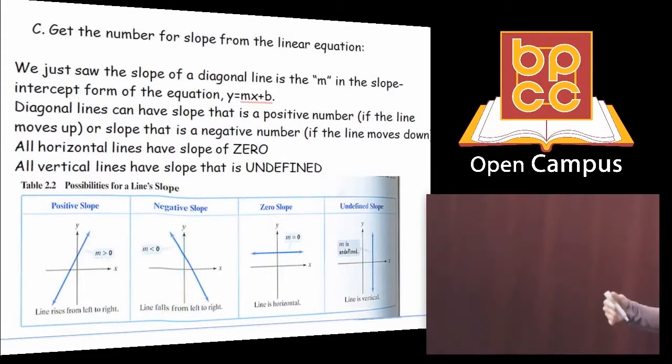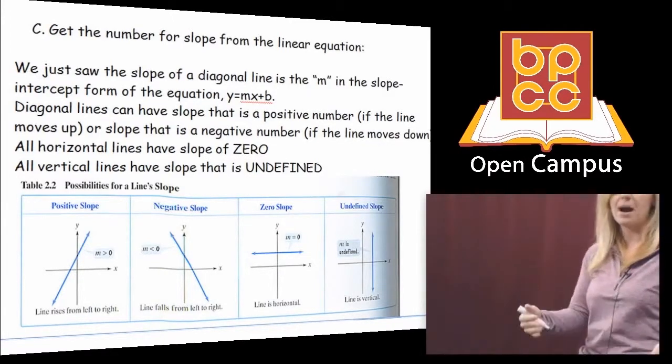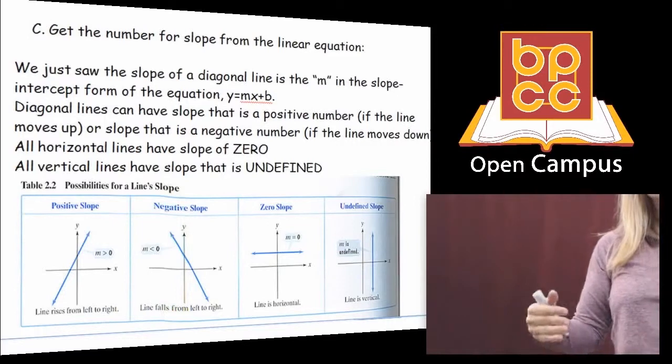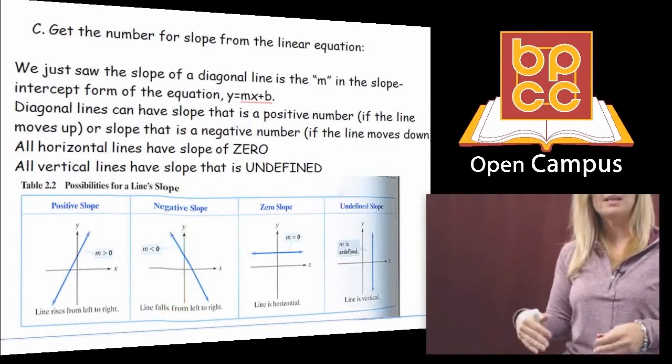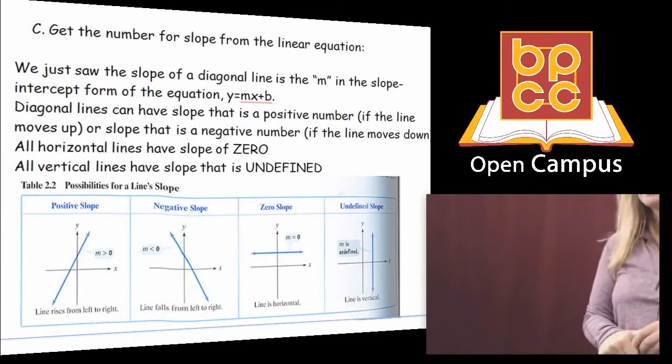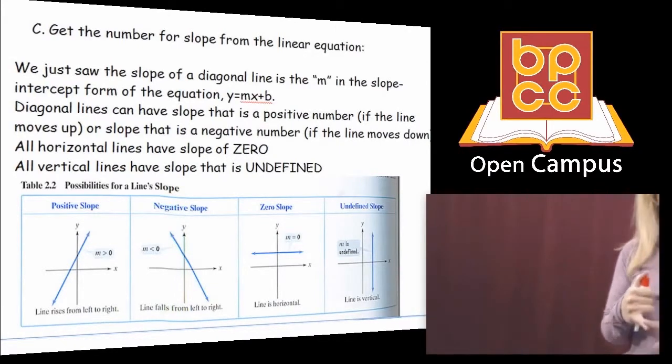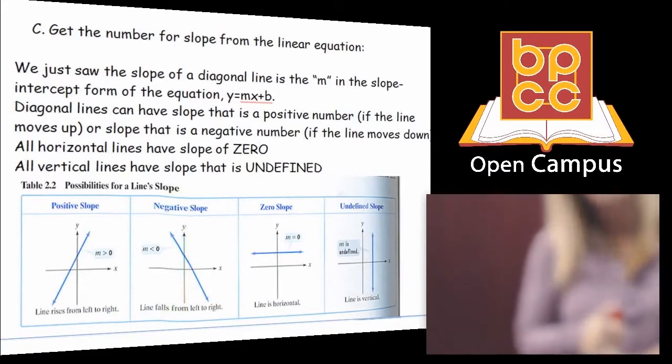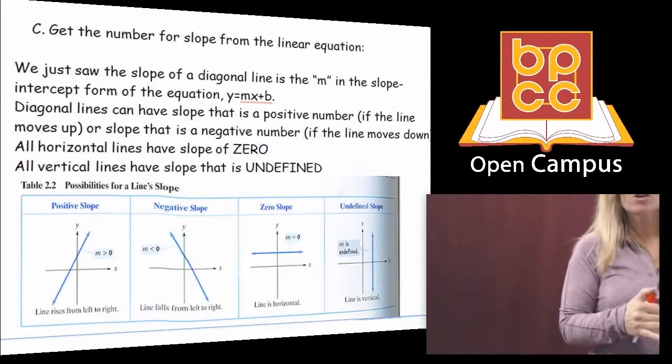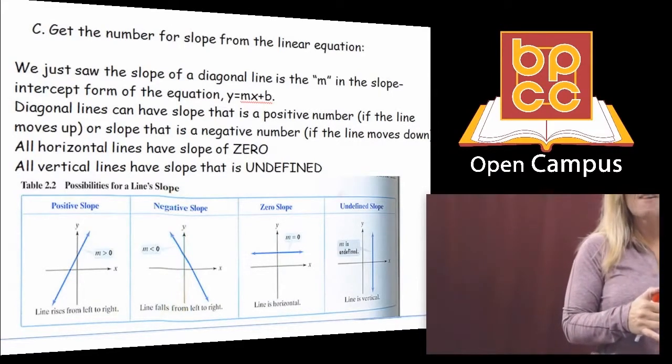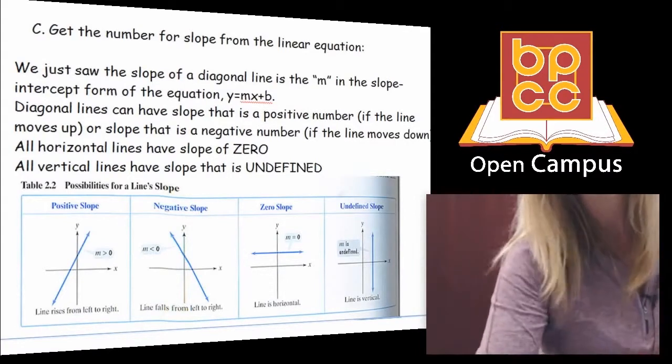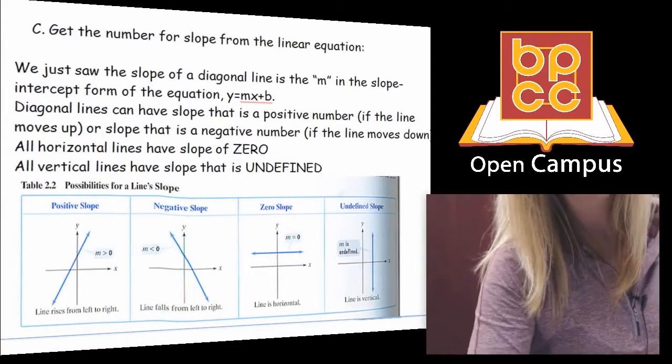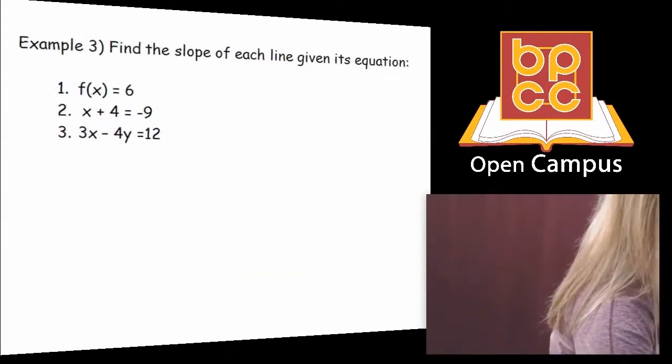If the diagonal line goes up, the slope's going to be a positive number. If the diagonal line goes down, the slope's going to be a negative number. If the line is horizontal, it's not going up, it's not going down, it's staying steady, the slope is zero. And if the line is vertical, the slope is called undefined. It doesn't exist. So let's look here. I believe we have three examples. So let's go to the whiteboard on this.